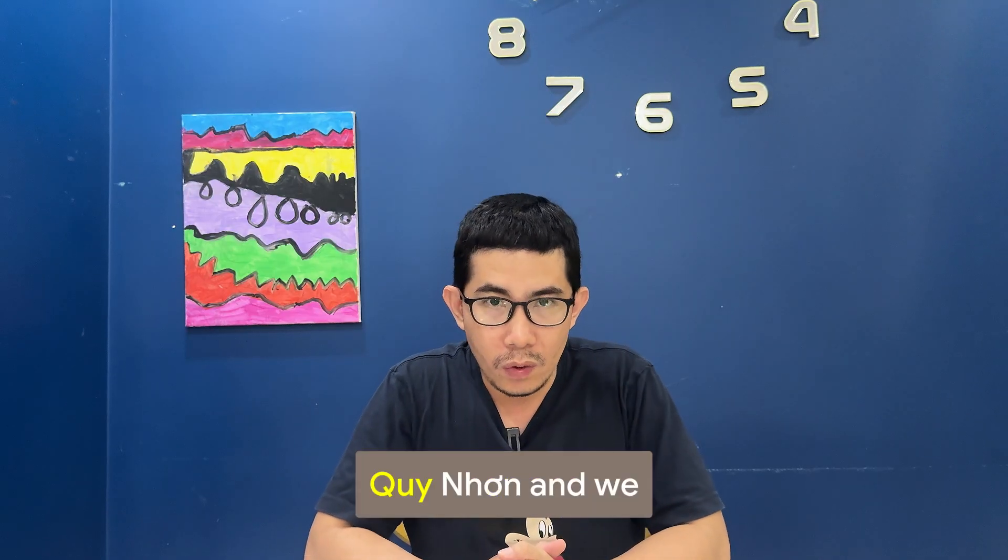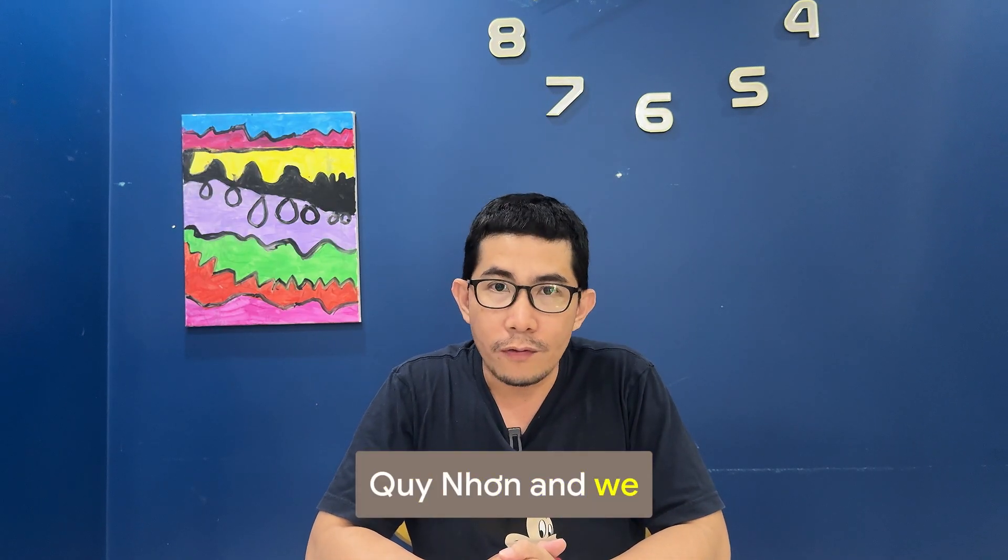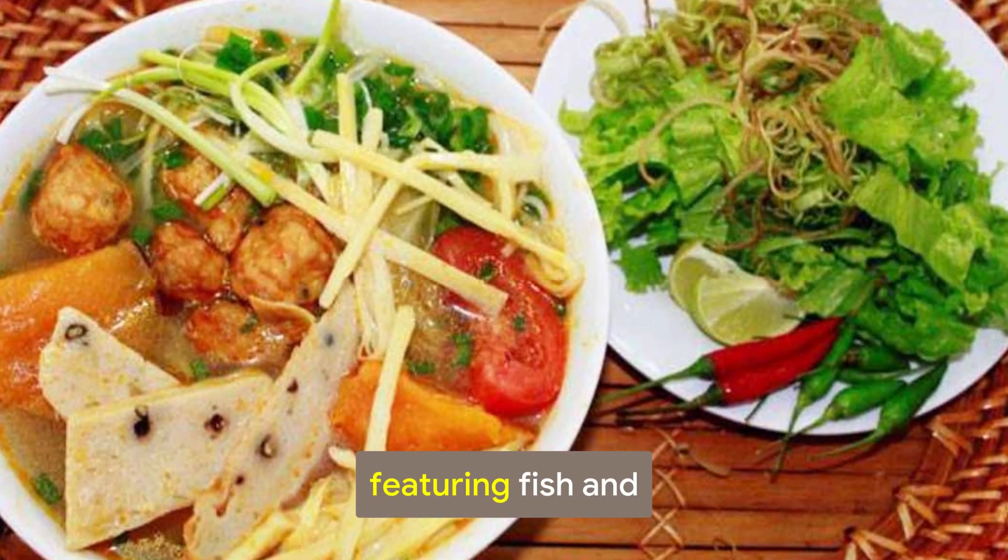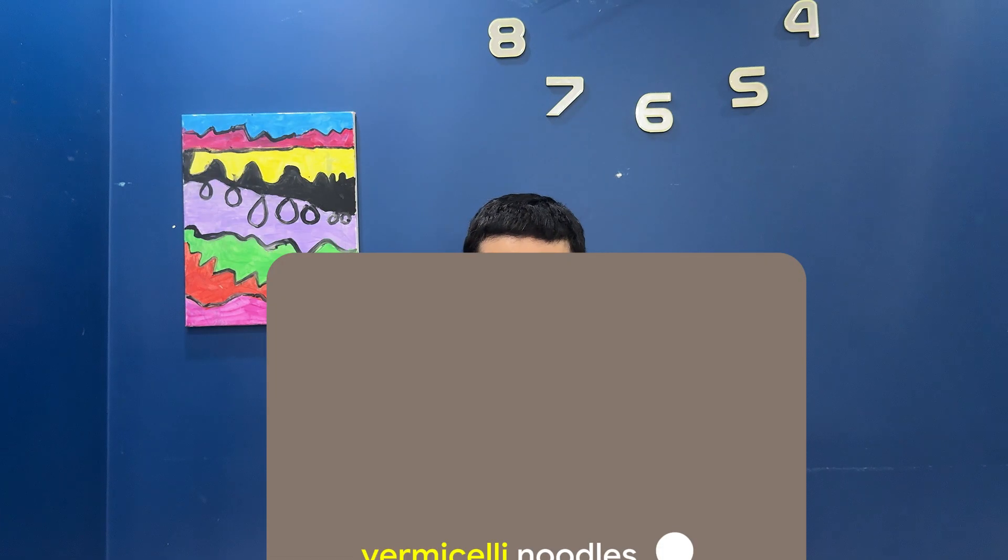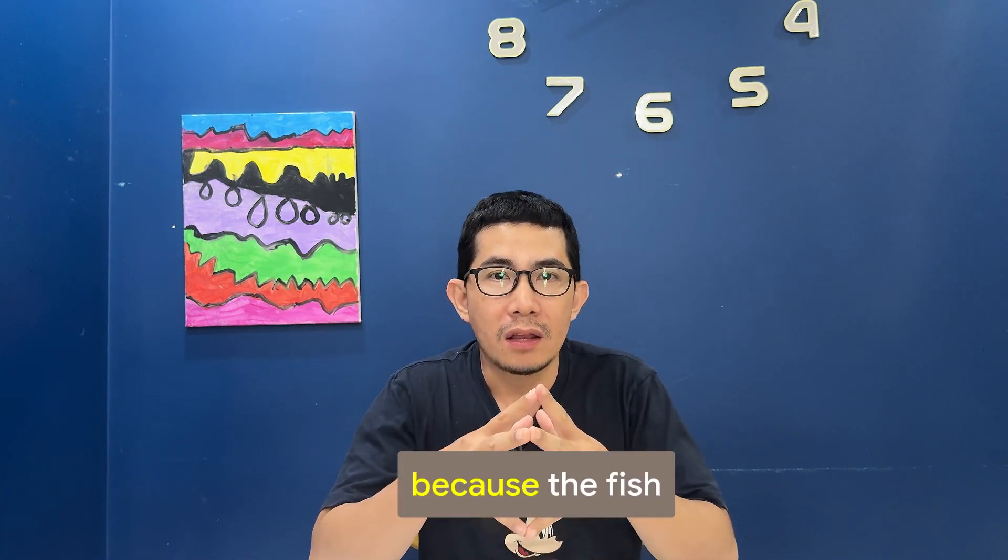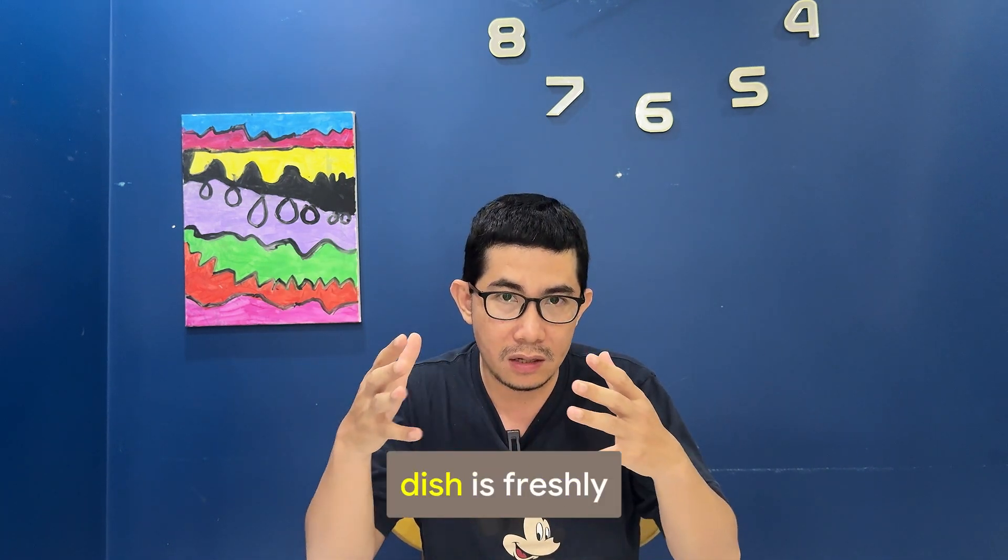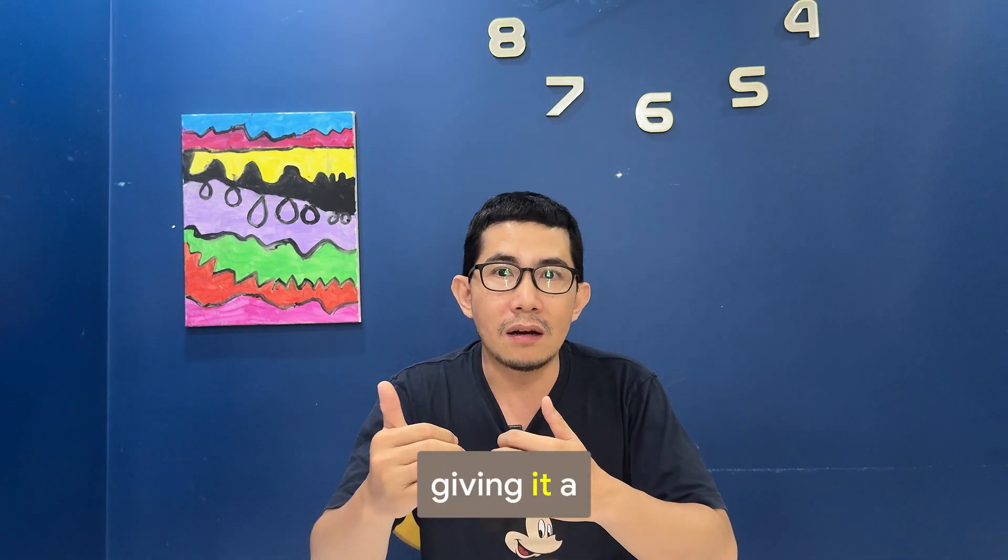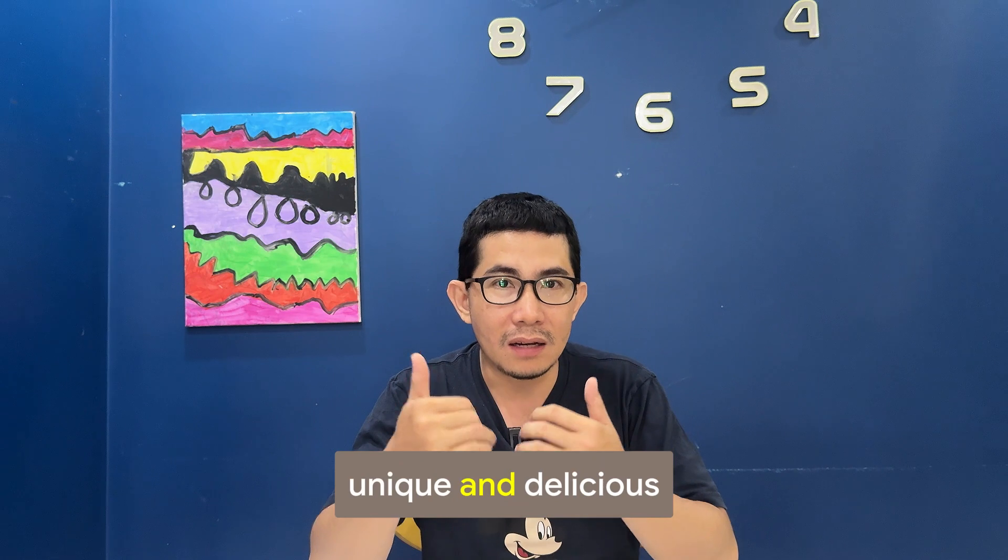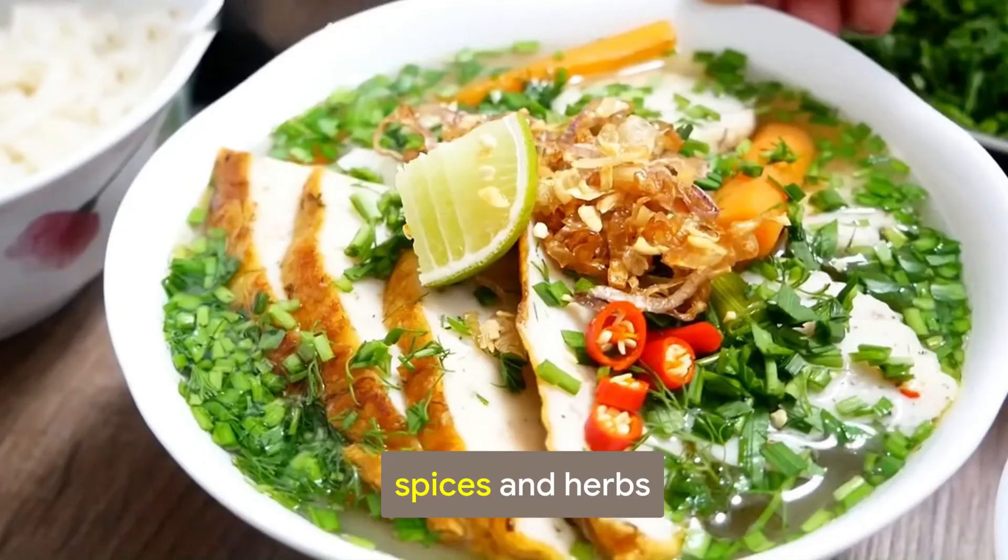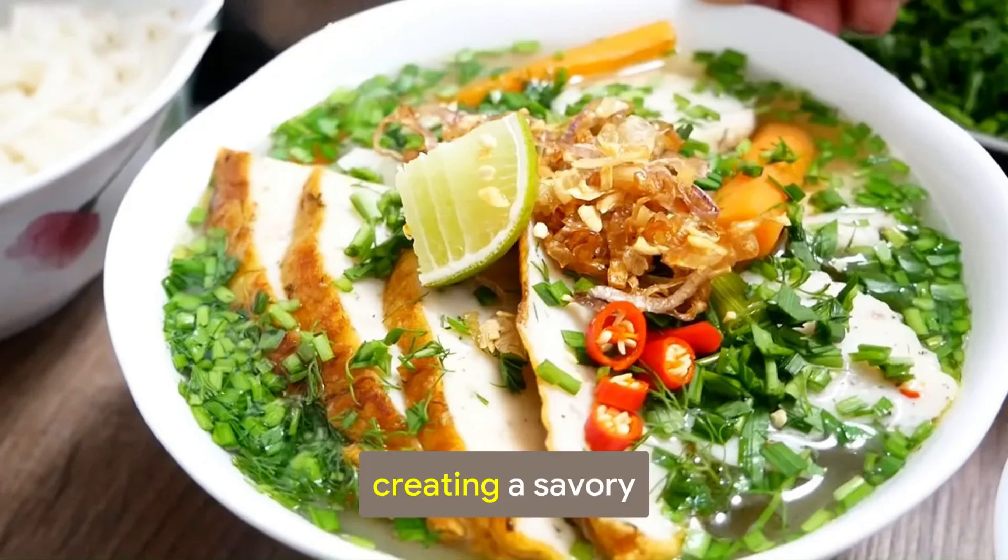I live in Quy Nhơn, and we're famous for Bún Cá, a local dish featuring fish and rice vermicelli noodles. It's so tasty because the fish used in this dish is freshly caught from the sea, giving it a unique and delicious flavor. The broth is infused with special spices and herbs, creating a savory and aromatic experience.